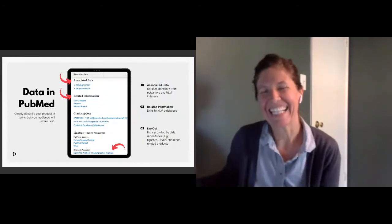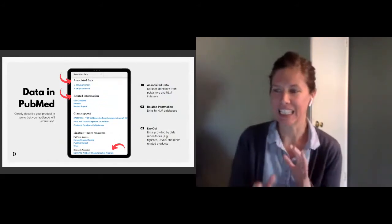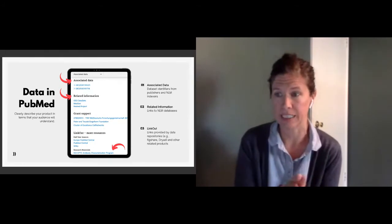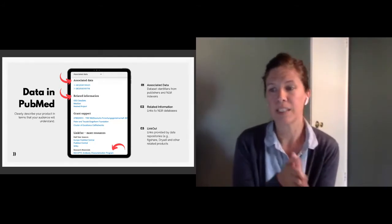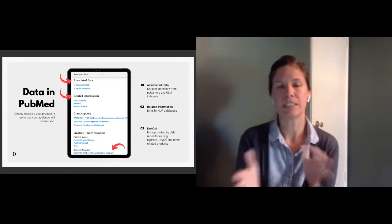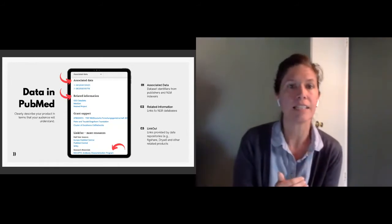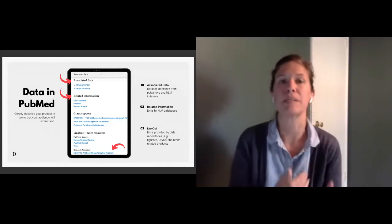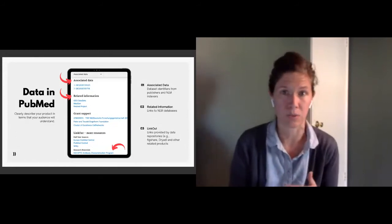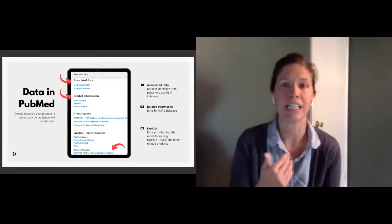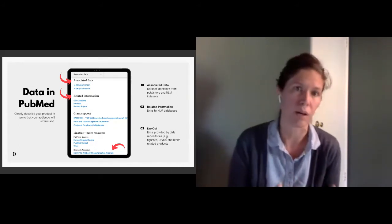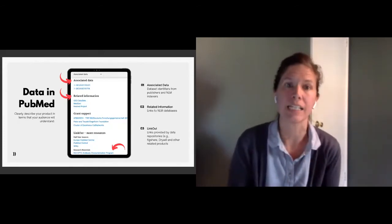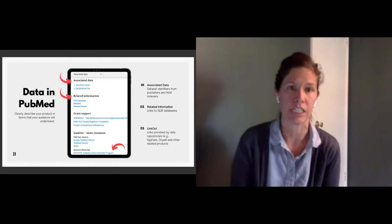Even when a data availability statement is present, there are many challenges: they frequently point to the article, supplementary material, or the author as the data source, a long-standing problem that keeps being perpetuated. The data linking we do in PubMed from article records is entirely separate from what we collect in PMC. In the new PubMed released last year, we made it easier to find dataset identifiers, but users still have to look across various sections because links come from various sources.